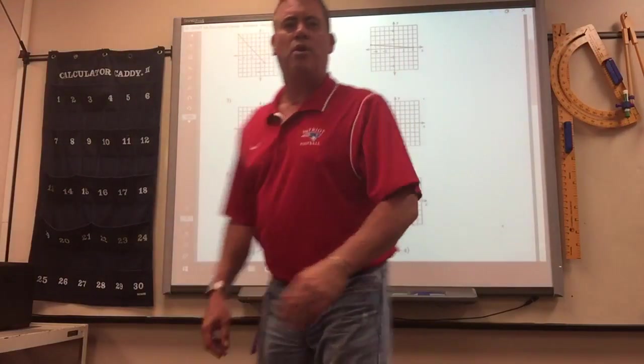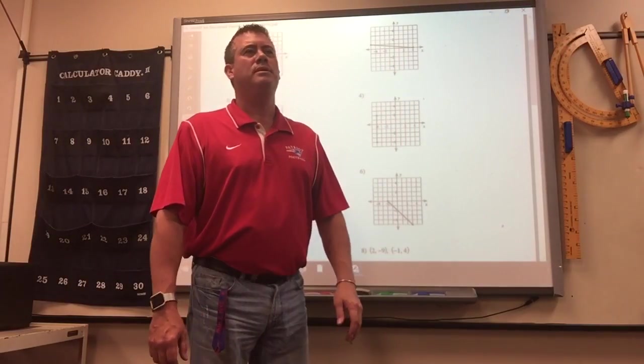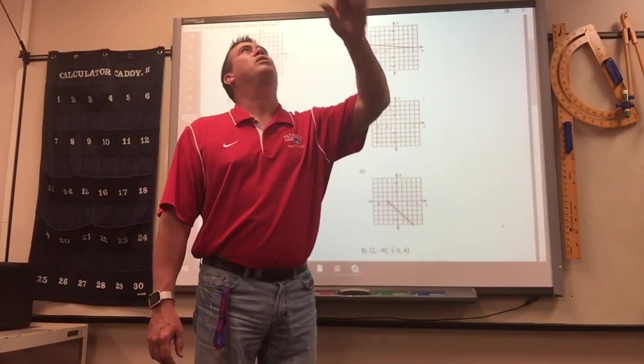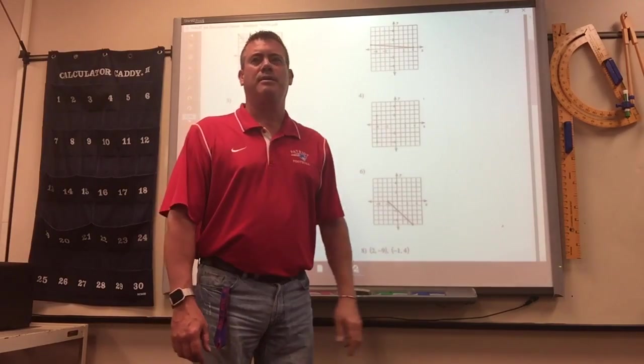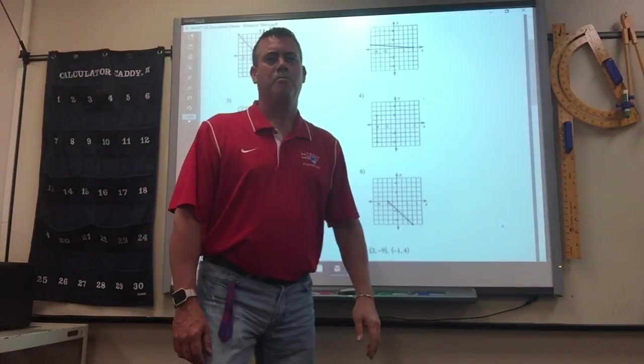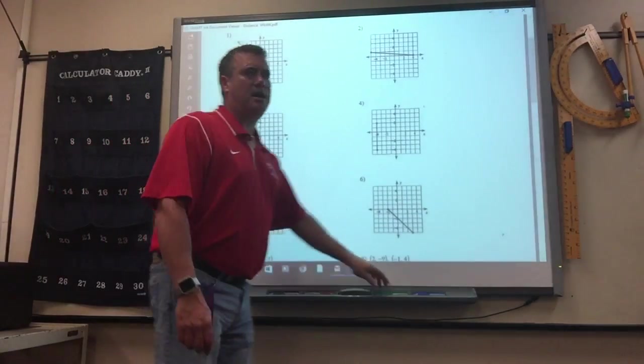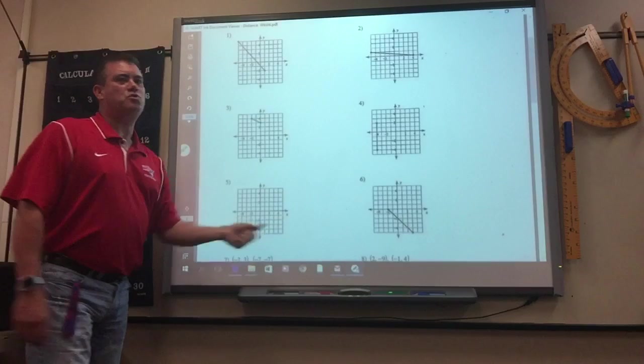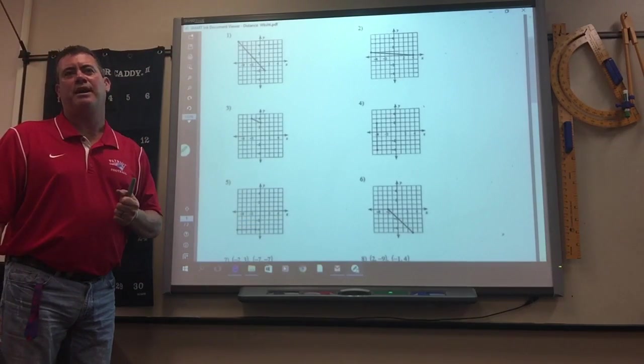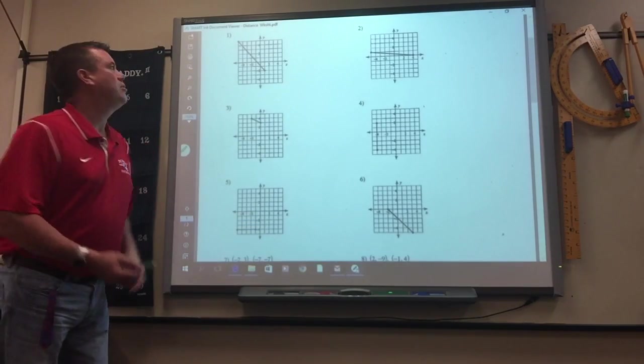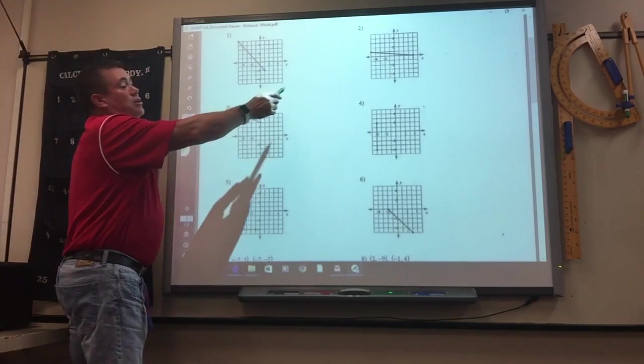We're just going to do 1 through 10. You want to hit one of the lights for me, Bill? Okay, so the distance formula. These first ones just have the lines, they don't have the coordinates for you. So you've got to find the coordinates.